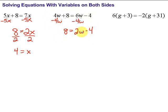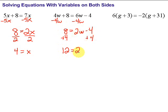Now this should look familiar. We've got 2w minus 4, and we want to get the variable by itself. First, get rid of the minus 4 by doing the opposite — add 4 to both sides. 8 plus 4 is 12, equals 2w. Our last step: divide by 2 on both sides. 12 divided by 2 is 6, so w equals 6.